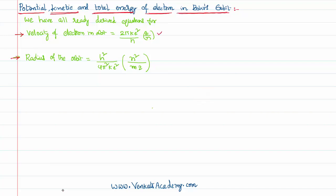These two equations we have derived in the previous video lessons. If you are not familiar with them, please look into the previous video. To remind you, the velocity of an electron in a given orbit is 2πke²/h multiplied by z/n, where 2π is a constant, k equals 1/(4πε₀), e is the charge of an electron (1.6×10⁻¹⁹ coulombs), h is Planck's constant, z is the atomic number, and n is the principal quantum number.